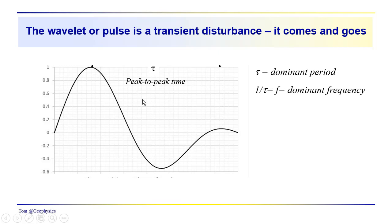The wavelet has something that we can refer to as a dominant period. That would be the peak to peak time in this case. So we have a peak here, we have a peak here. This is the interval of time between these two peaks. We can refer to that as the dominant period, and one over τ, or f, as the dominant frequency.